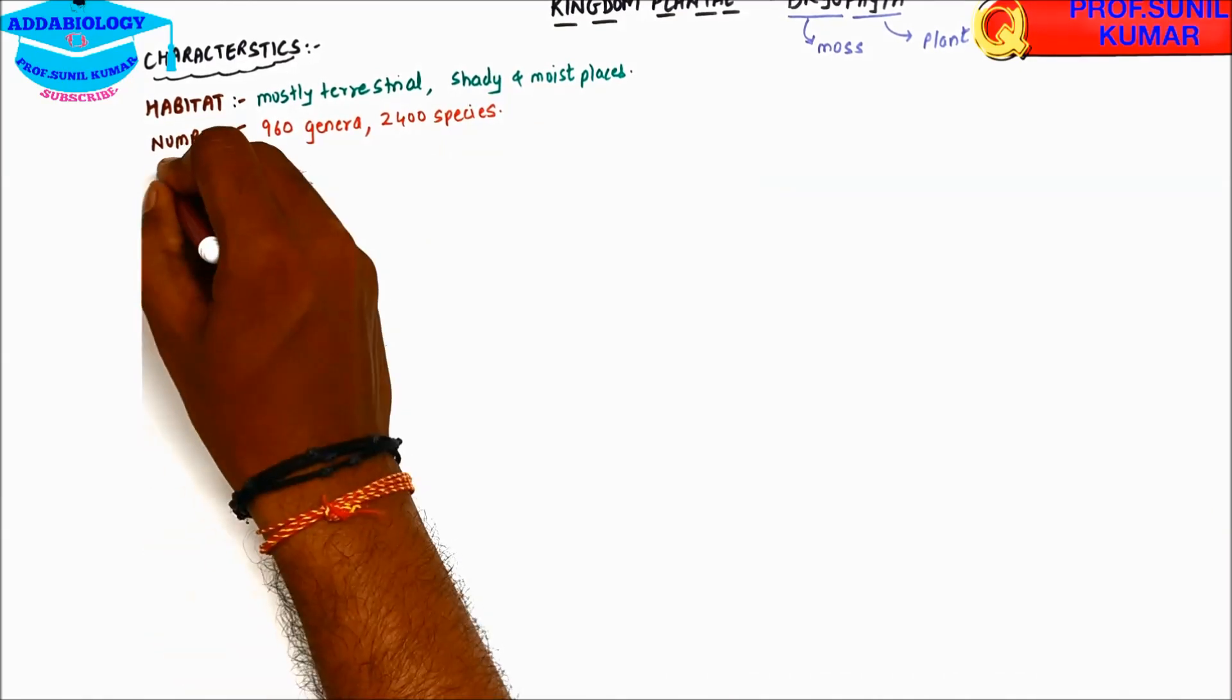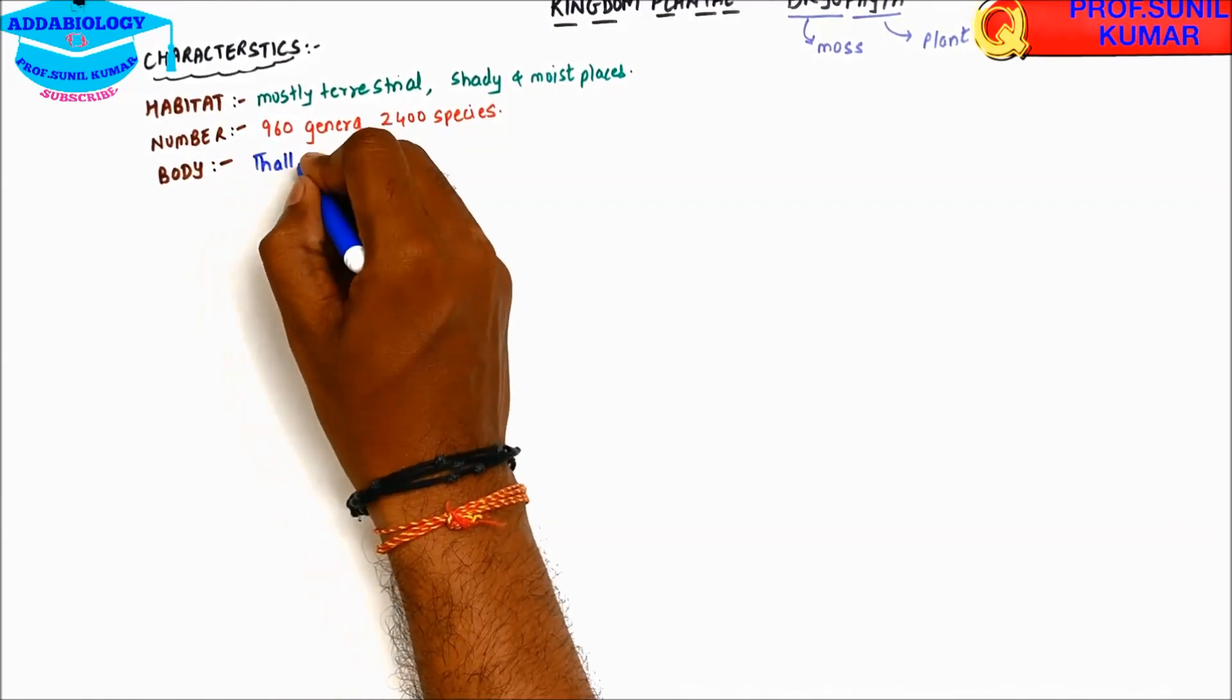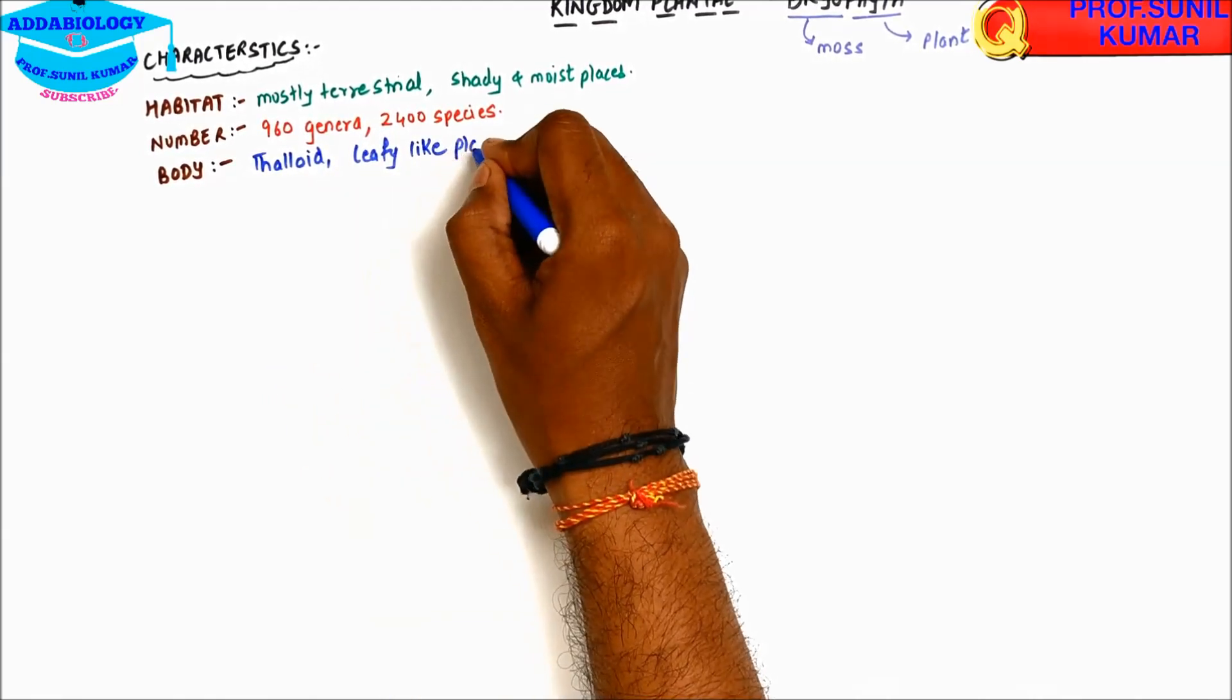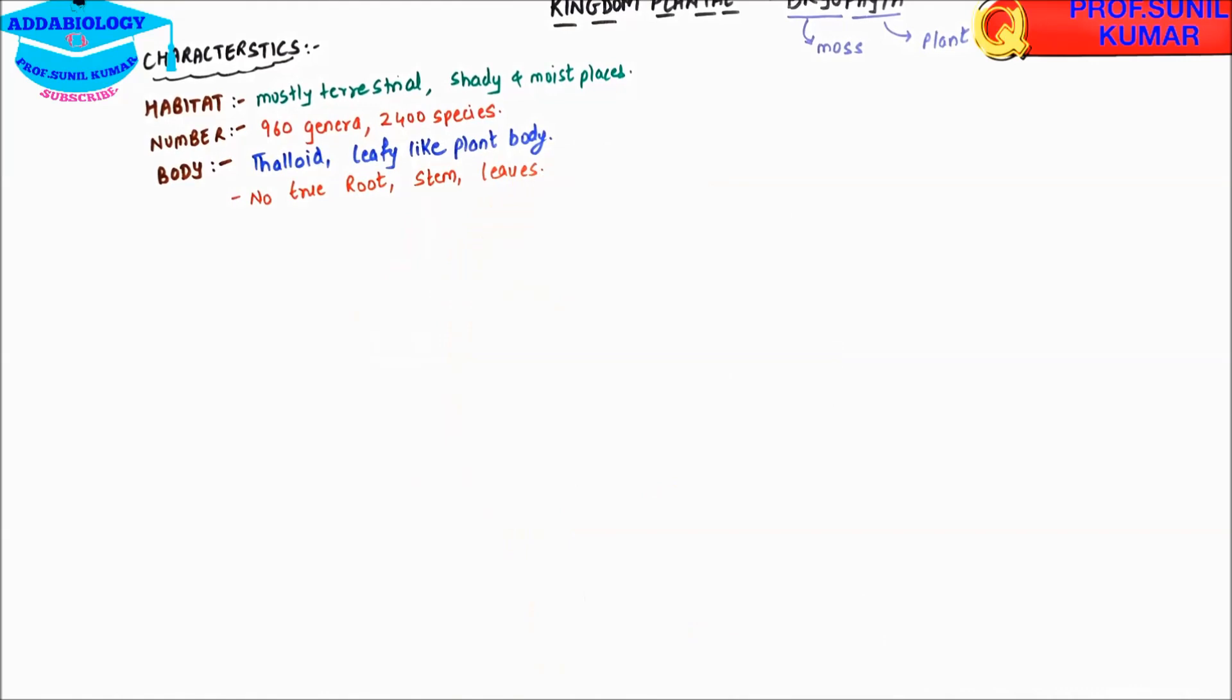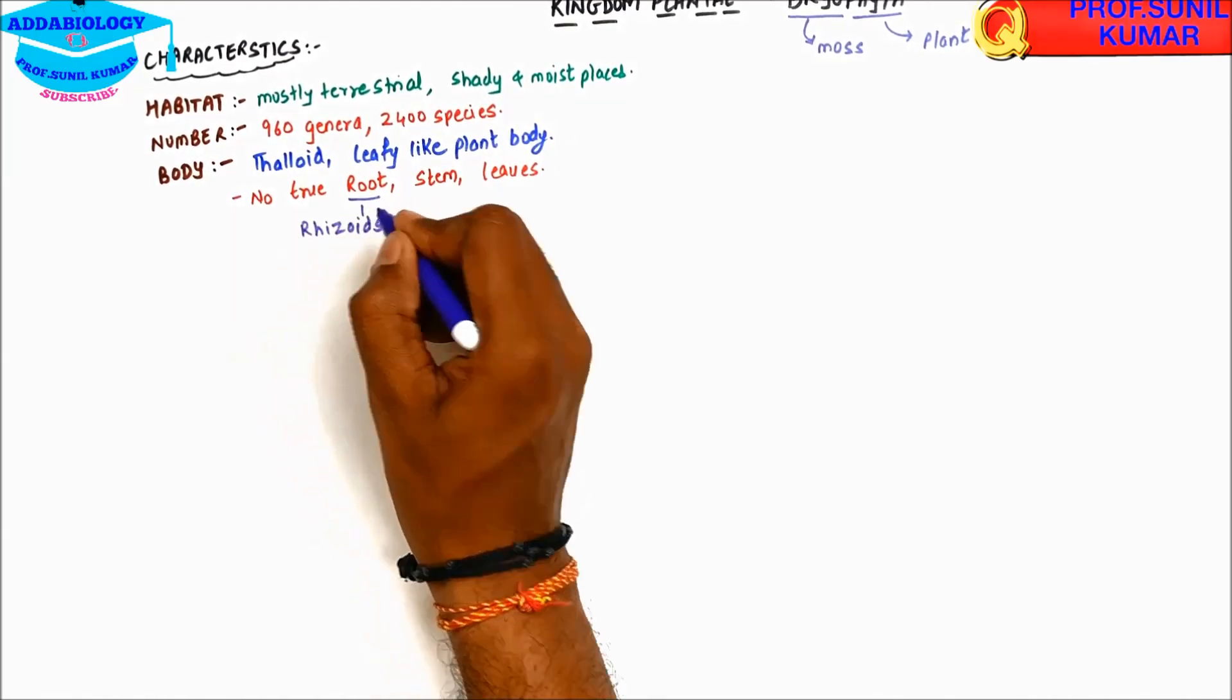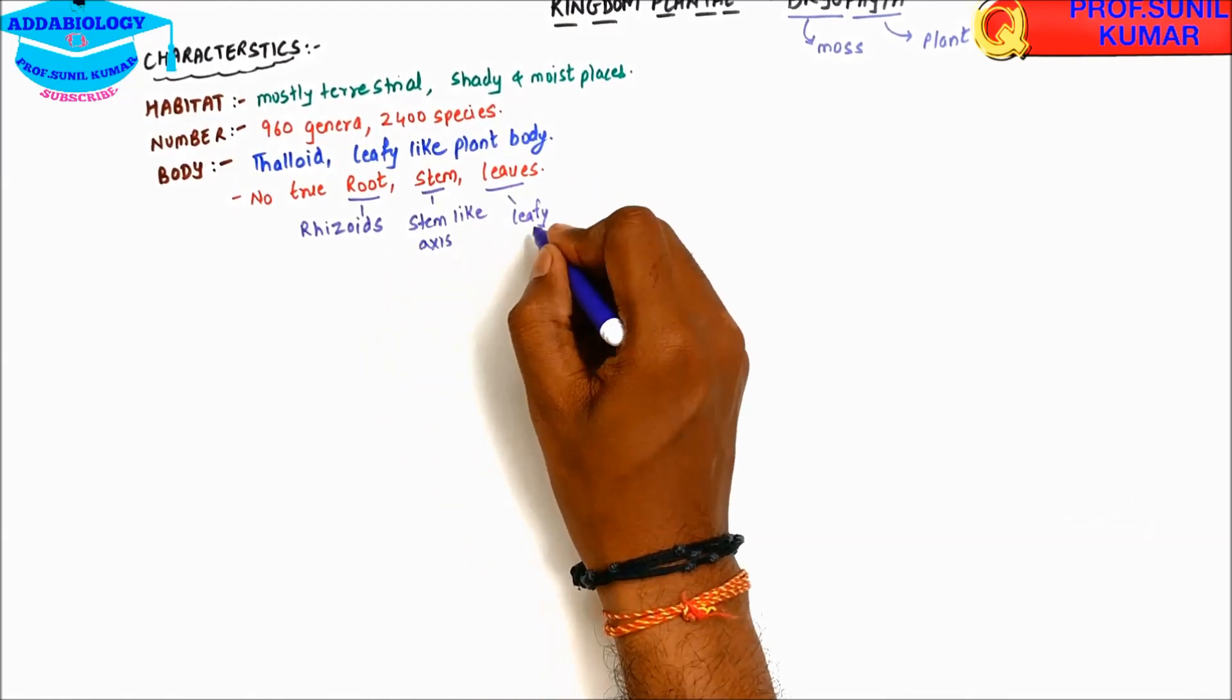When we talk about body of bryophyte, it is thalloid, leafy-like plant body. So in bryophyte there is no true root, stem, and leaves. If they have no true root, stem, and leaf, instead of root they have rhizoids which work like root, for stem they have stem-like axis, and for leaves they have leafy appendages.